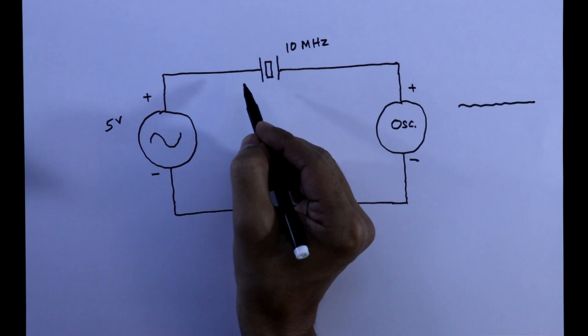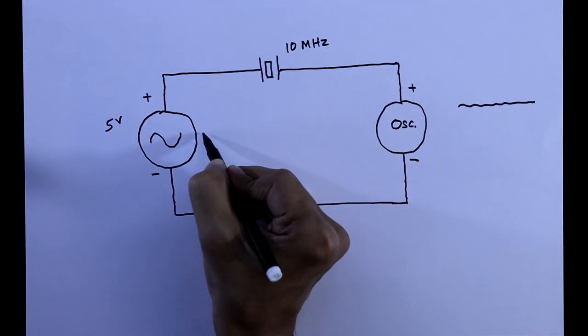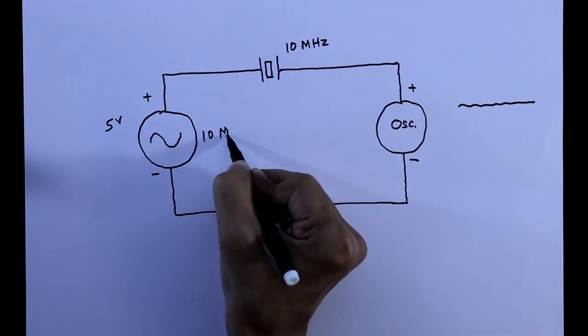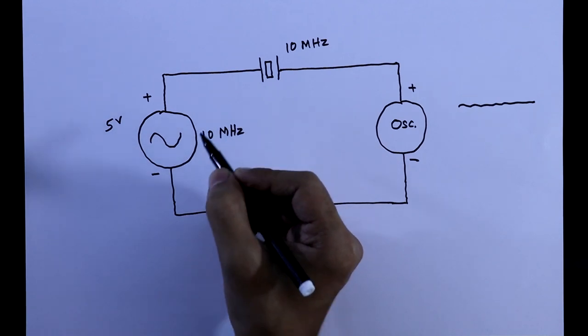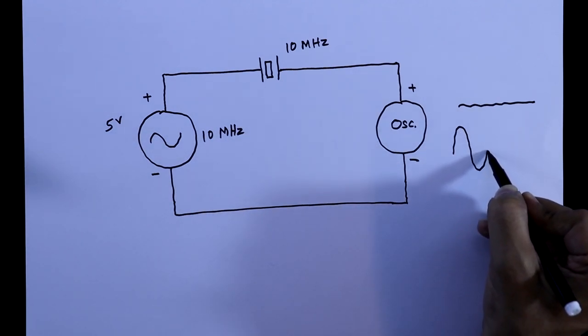And whenever it is equal to this, means when you are generating 10MHz, then it will be something like this.